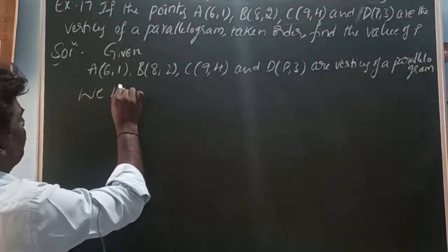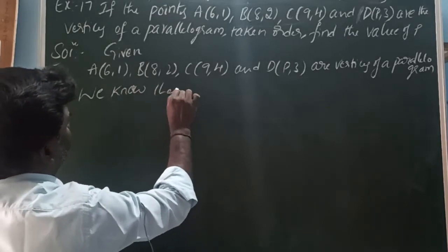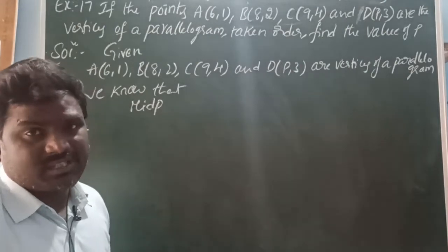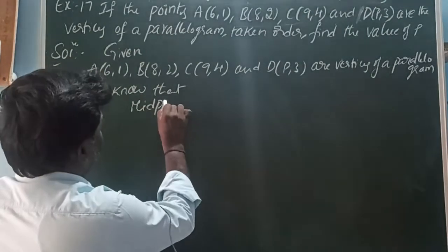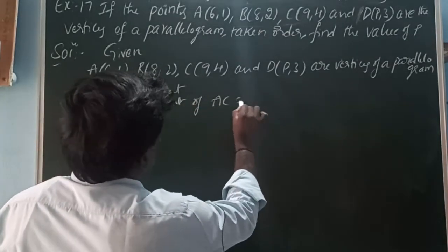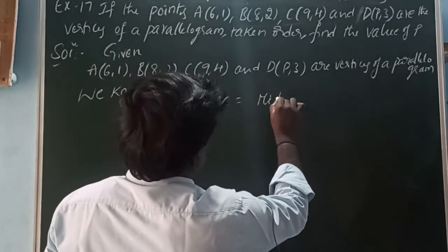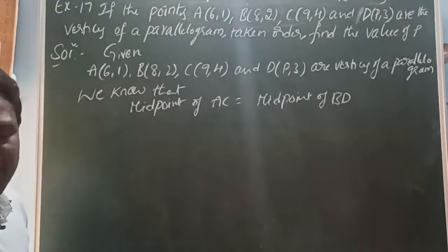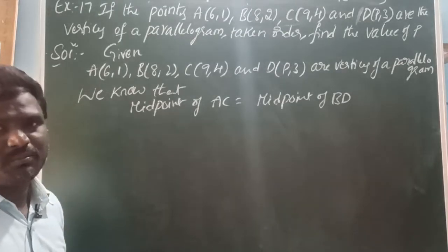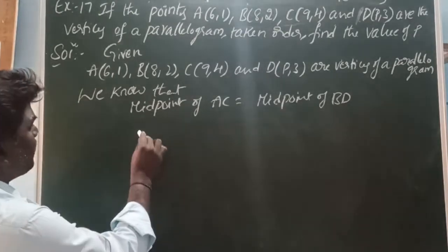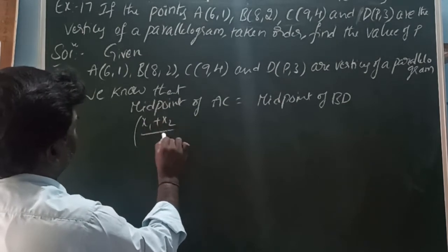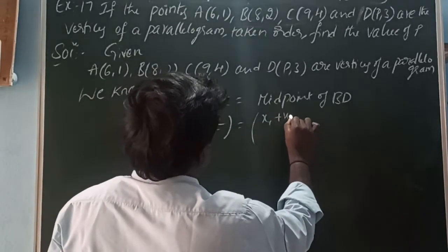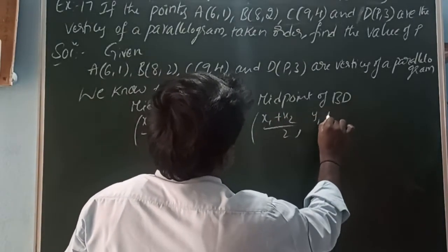We know that the diagonals bisect each other, meaning the midpoint of AC equals the midpoint of BD — the common midpoint of the two diagonals. Using the midpoint formula: x1 plus x2 by 2, y1 plus y2 by 2 for AC, and similarly x1 plus x2 by 2, y1 plus y2 by 2 for BD.